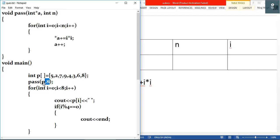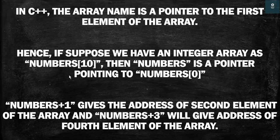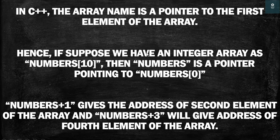You should know something before solving such questions: in C++, the array name is the pointer to the first element of the array. Whenever we use the array name, we mean we are accessing the address of the first element. For example, if we have an array whose name is 'numbers' with 10 elements, then 'numbers' is a pointer pointing to numbers[0], the first element.